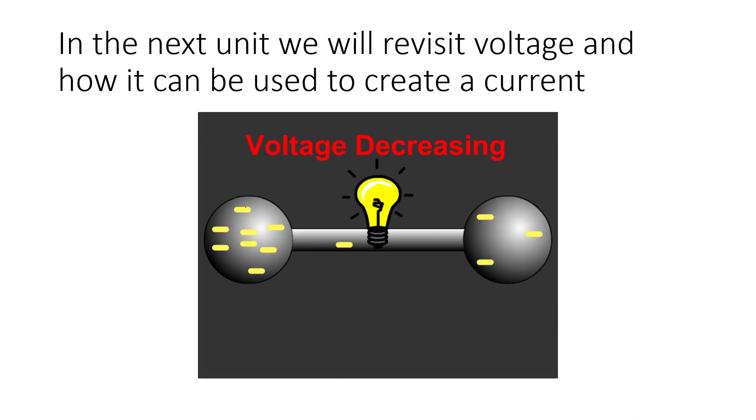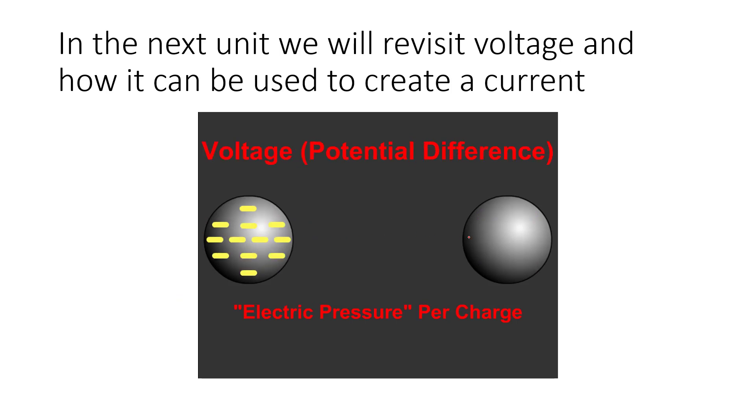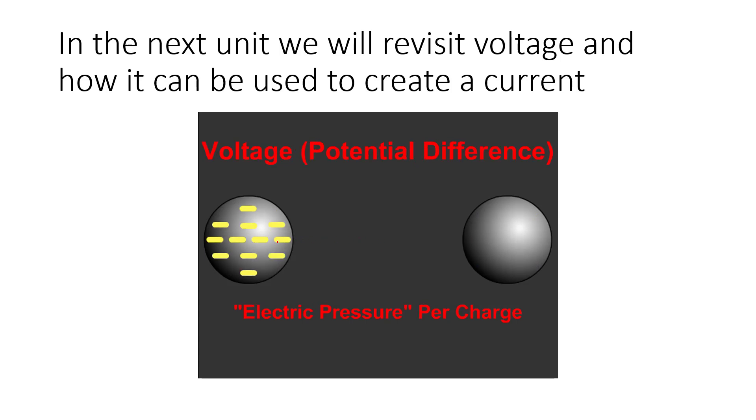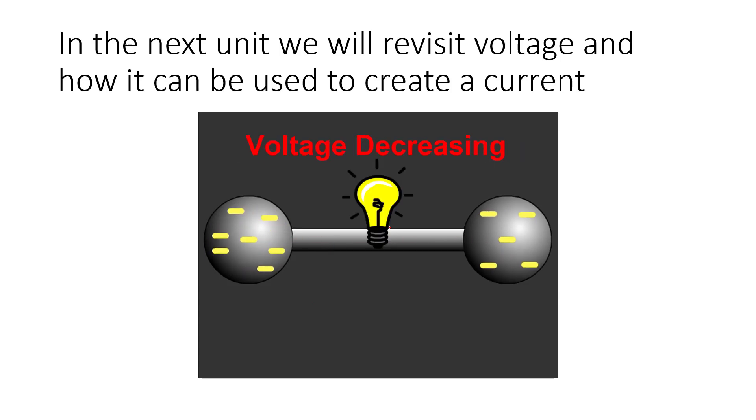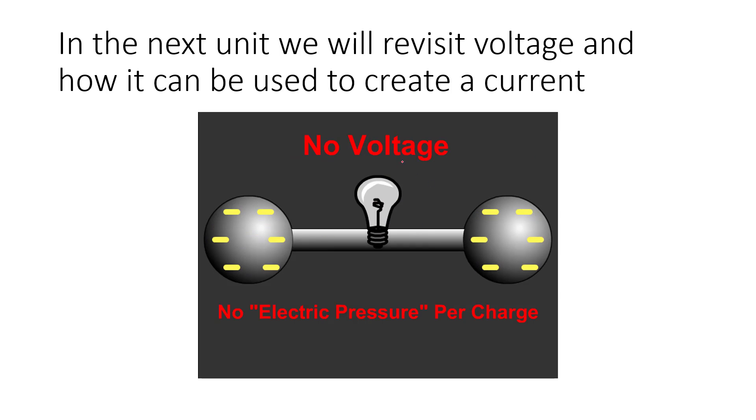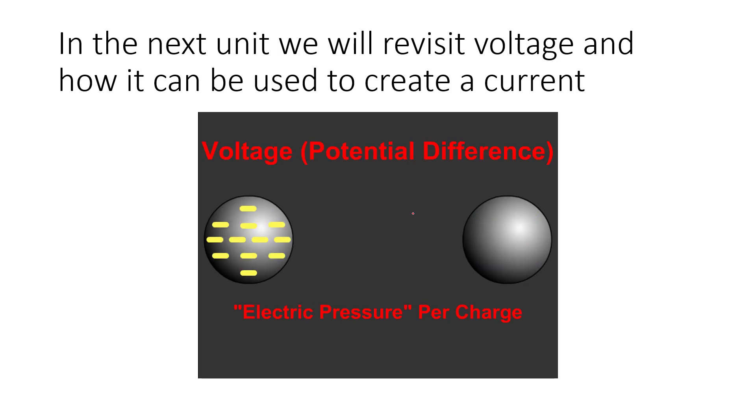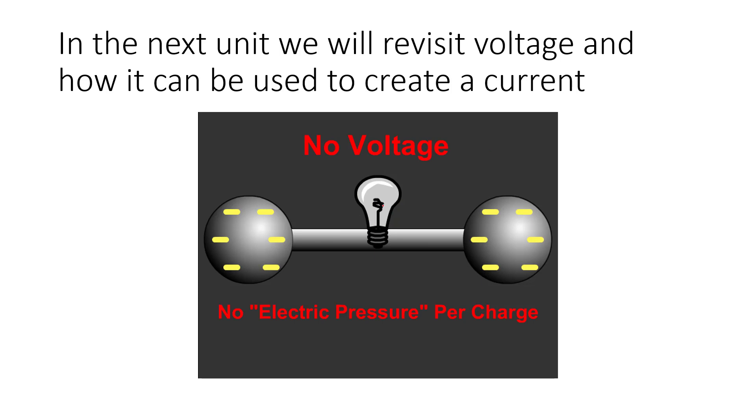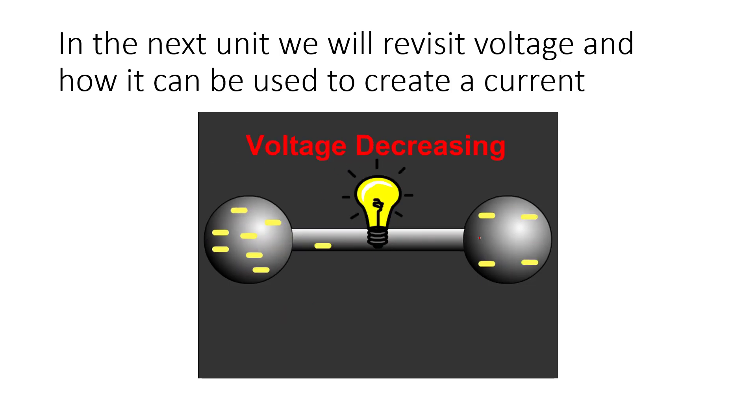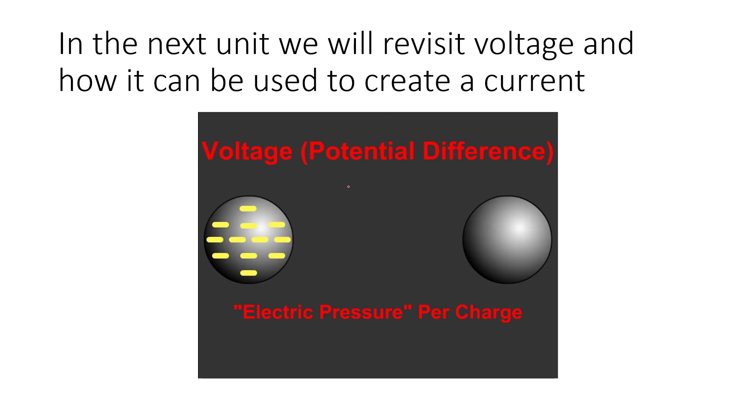The next unit, we're going to look at what will happen when we give something with a voltage a pathway to neutralize itself. That current, which the next unit is going to be current, can be used to power a device of some sort. At some point in time, when those charges are equal, there's no desire to flow either way. When there's no desire for electrons on a charge per charge basis to flow, we would call that no voltage. As you can see, the light's not working at that point in time.